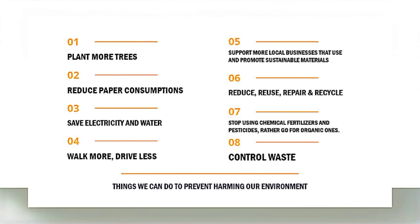Things we can do to prevent harming our environment: 1. Plant more trees. 2. Reduce paper consumption. 3. Save electricity and water. 4. Walk more, drive less. 5. Support more local businesses that use and promote sustainable materials. 6. Reduce, reuse, repair, and recycle. 7. Stop using chemical fertilizers and pesticides — rather, go for organic ones. 8. Control waste.